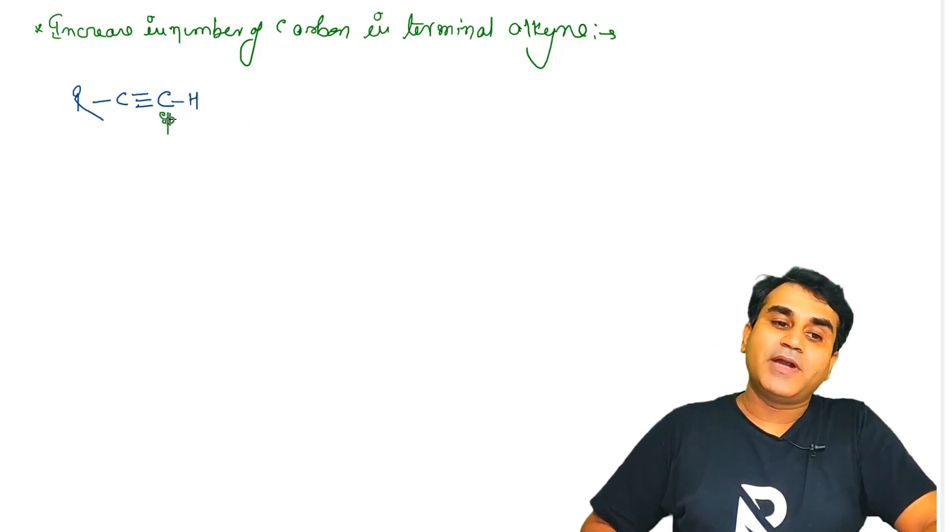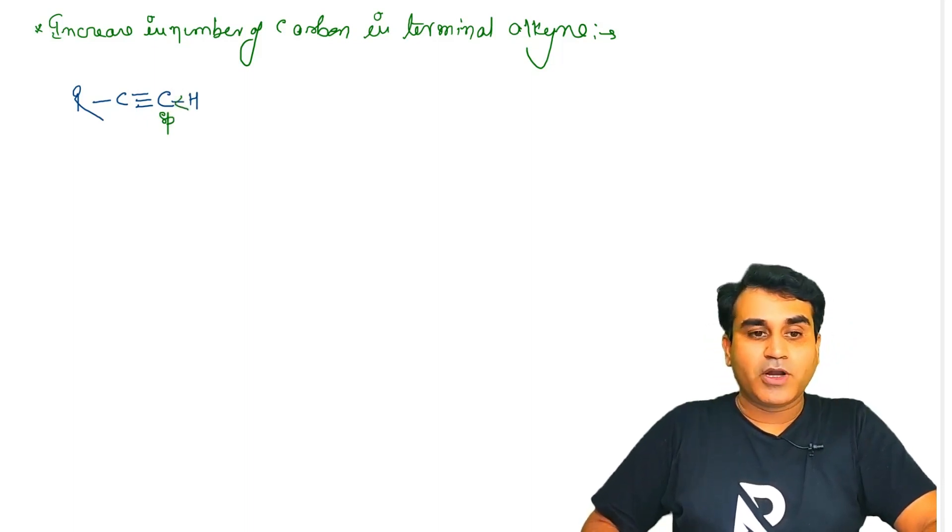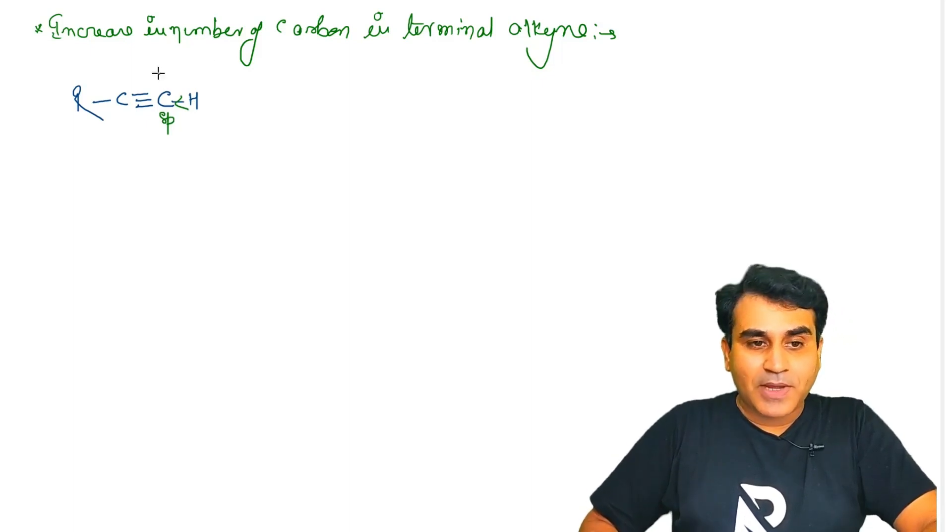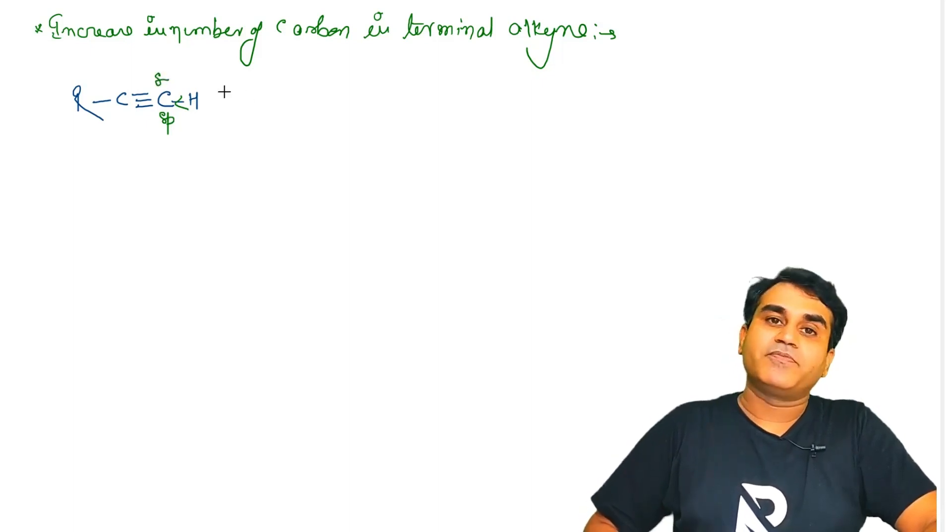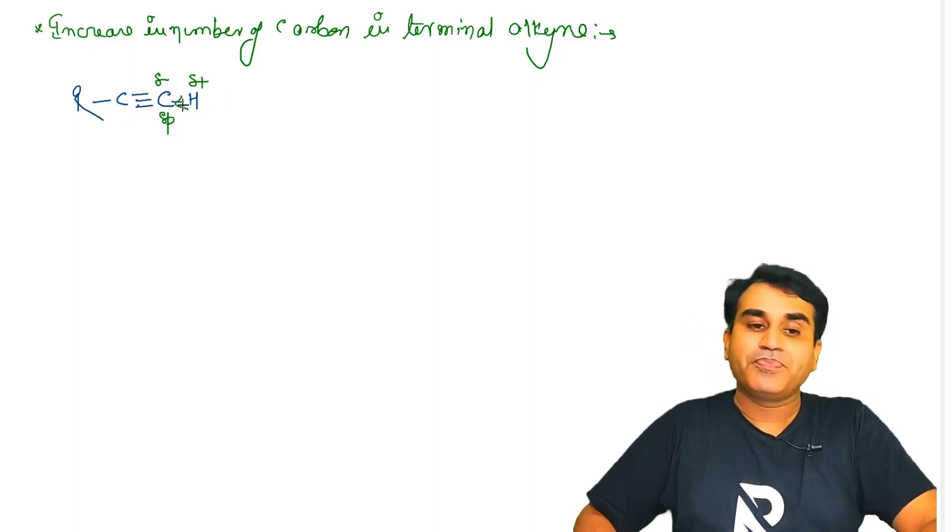We know that terminal alkyne carbon hybridization is sp, and sp hybridized carbon electronegativity is more. So the bond electrons pull towards it, so carbon is partial negative and hydrogen is partial positive.